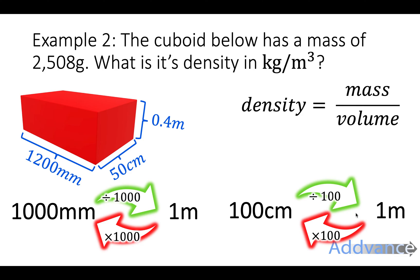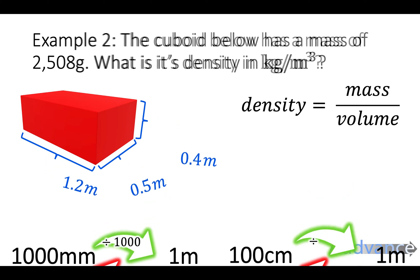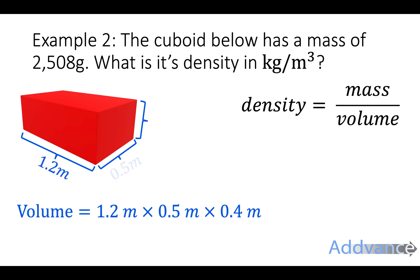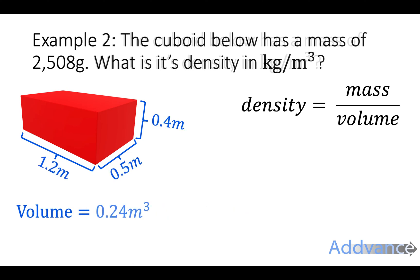So 50 divided by 100 is 0.5. You are welcome to use your calculator for all of this, of course. And so we've converted to meters now, and to find the volume, we're just going to multiply. So 1.2 times 0.5 times 0.4 on your calculator is 0.24 meters cubed.